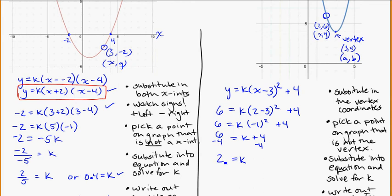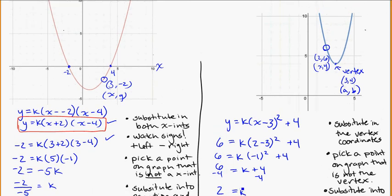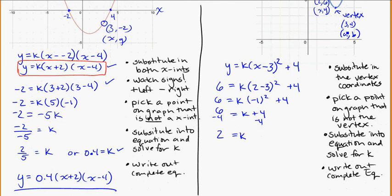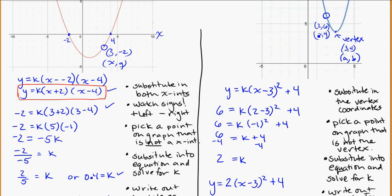Using the corrected point (2, 6): 6 minus 4 equals 2, so k = 2. This makes sense — k is positive (upright parabola) and greater than 1 (narrow/skinny parabola), which matches what we see on the graph. The last step is to write the complete equation: y = 2(x - 3)² + 4. The minus 3 and plus 4 come from the vertex being 3 to the right and 4 up.